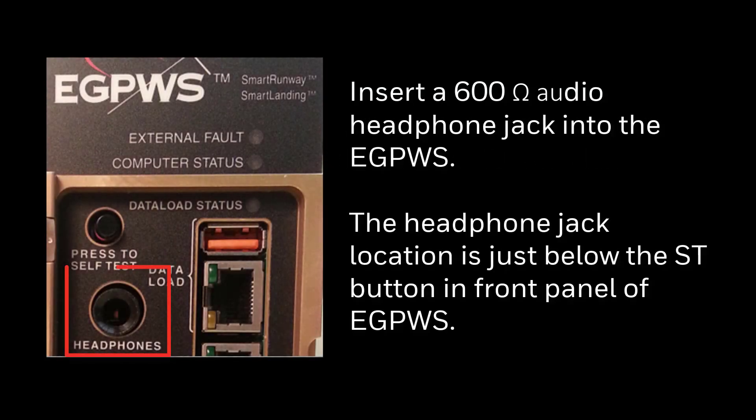Insert a 600-ohm audio headphone jack into the EGPWS, which is required to hear the software version annunciation. The headphone jack location is just below the SD button on the front panel of the EGPWS.